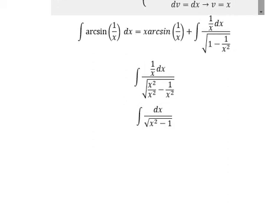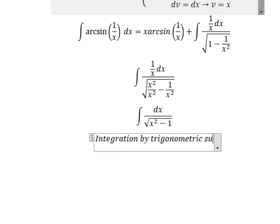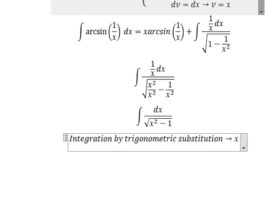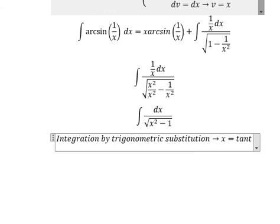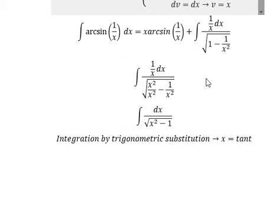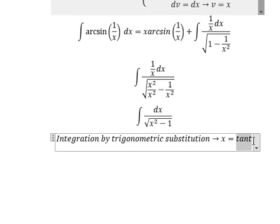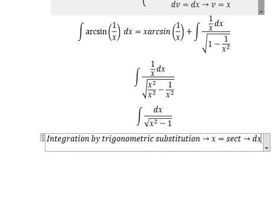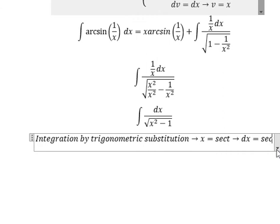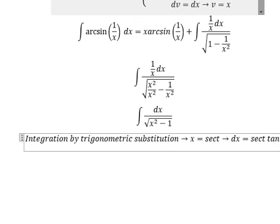Now we use integration by trigonometric substitution. We put x equal to - sorry - secant of t. So we get dx equals secant t tan t dt.